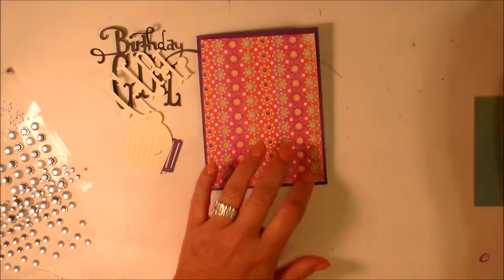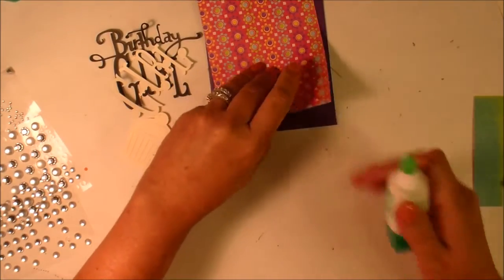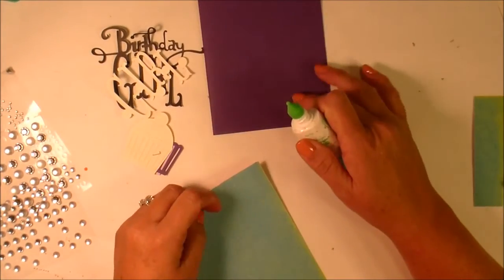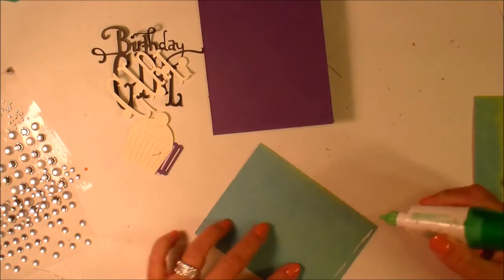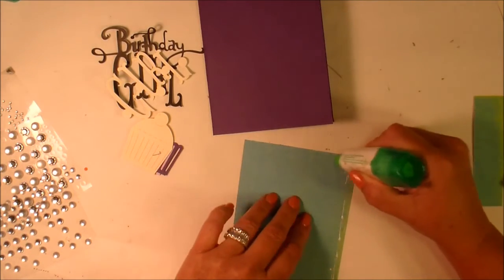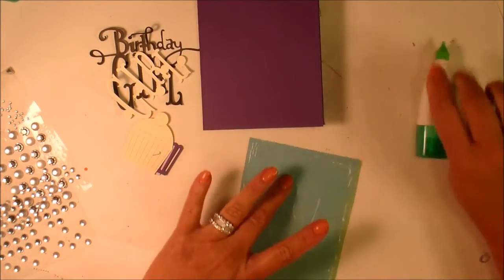I'm going to add some bling to this. This is Coordinations cardstock from Joann's. It's not very thick—I'm thinking it's probably less than 65 pound, if there's such a thing.